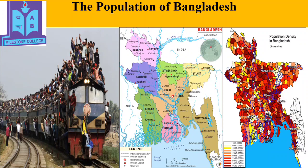The number of people living in a country is the population of that country. The land area of Bangladesh is 1,47,570 square kilometers. In Bangladesh, 1,015 people live per square kilometer. This is the population density of Bangladesh. According to the census of 2011, the total population of Bangladesh is 14,97,72,364. The ratio of men and women is 50.01 to 49.99. In terms of total area, Bangladesh is 90th in the world, and in terms of population, Bangladesh stands 8th in the world.